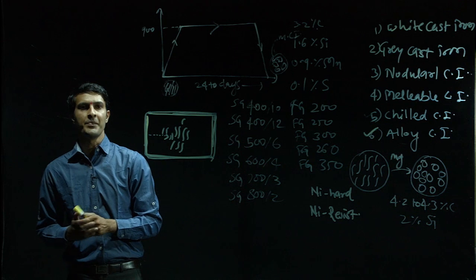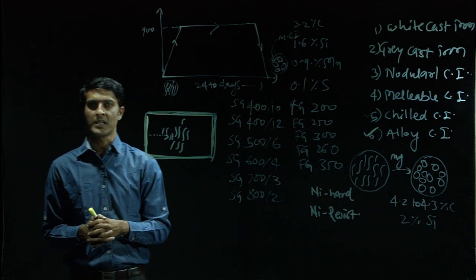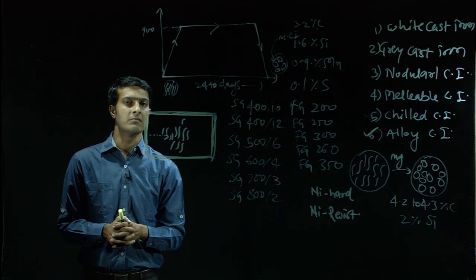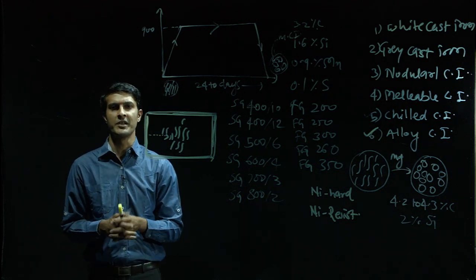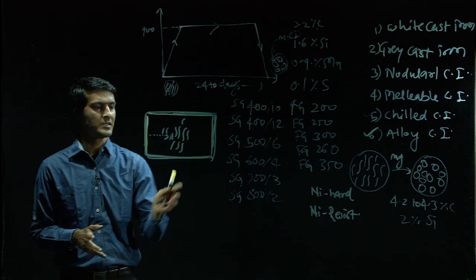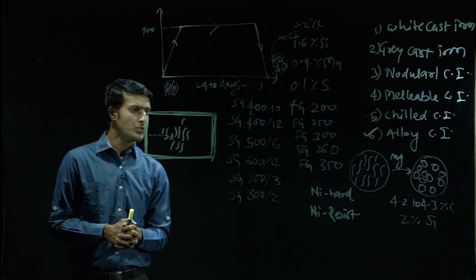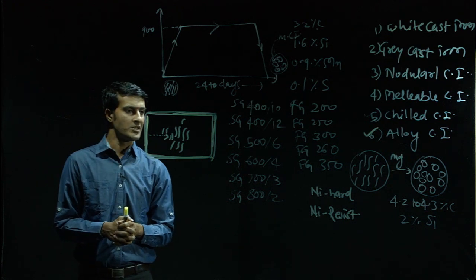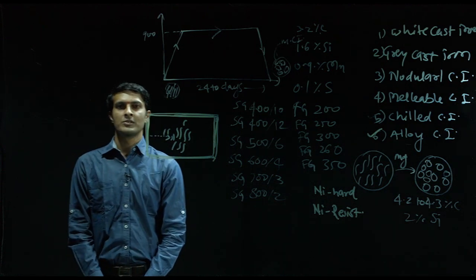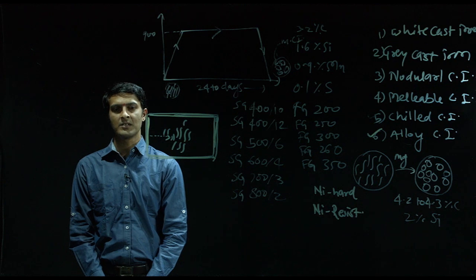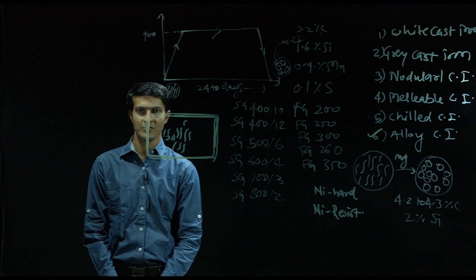The next one is Nickel Resist. Nickel Resist is an alloy cast iron produced from gray cast iron where the corrosion resistance — which was fairly very low — can be increased. In Nickel Resist, near about 14 to 15 percent nickel is added, giving excellent corrosion resistance properties to the gray cast iron. Today we end with cast irons. In the next class we will learn about non-ferrous alloys, that is brass and bronzes. Thank you.